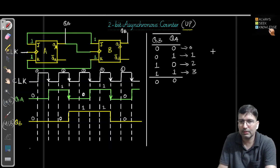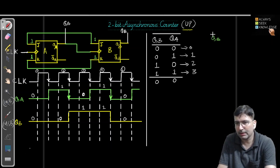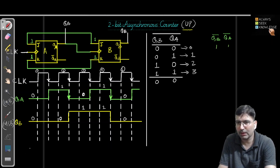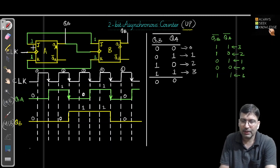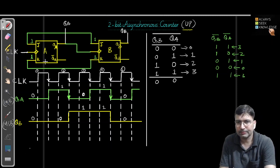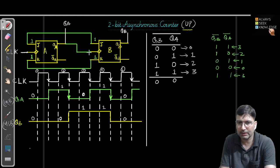If you take QB bar as the output pin and QA bar as the output pin, you will get the complement of each state. So you will get 11, then 10, then 01, then 00, and when 00 comes again you start getting 11. In that way the same circuit will start behaving like a down counter — 3, 2, 1, 0, then again 3. So to convert the same circuit as a down counter, we keep the same clock connection from QA to flip-flop B, but consider QA bar and QB bar as the output pins.